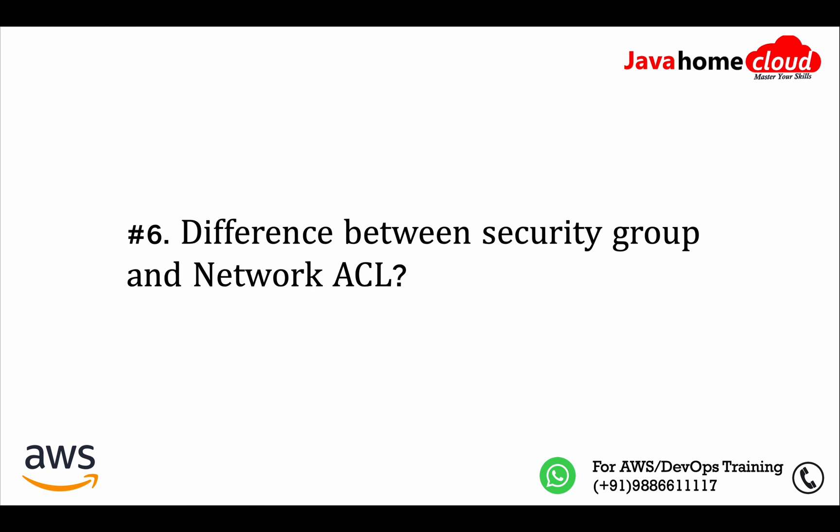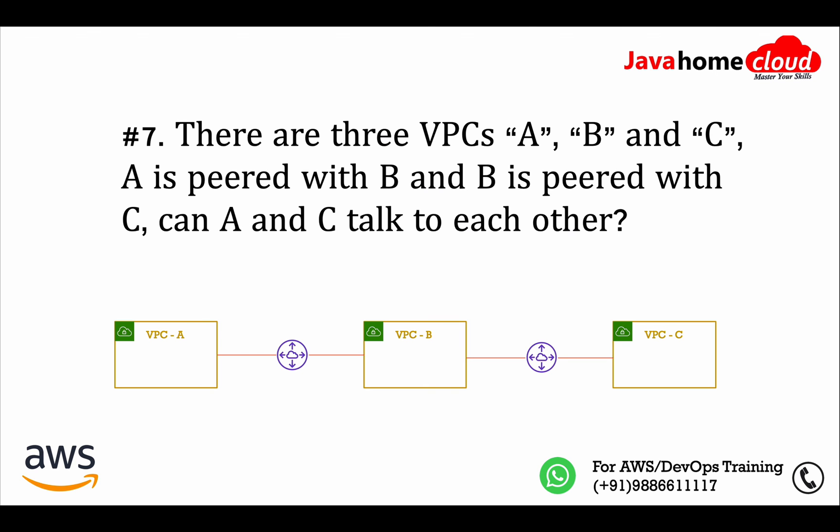One subnet can have only one NACL, but multiple subnets can point to the same NACL. Security Groups however can be applied in multiples — one instance can have multiple security groups. Security groups are attached to Elastic Network Interfaces; if your EC2 has two ENIs, each ENI can have up to five security groups.